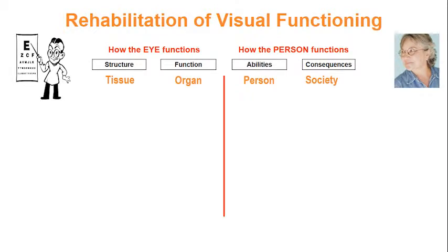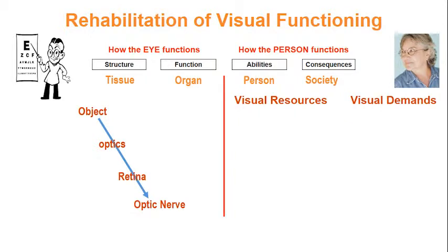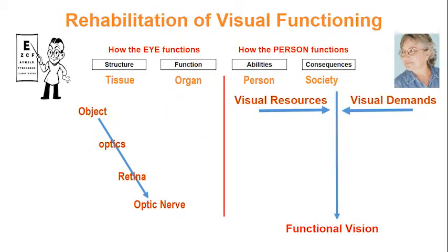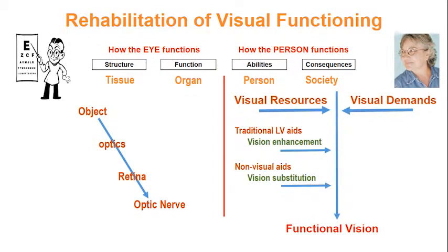The complexity of the problems on the left and on the right is also different. On the left, where we deal with how the eyes function, there is a fairly straightforward path from the object screen through the optics of the eye to the retinal image and on to the optic nerve signal. On the right, where we deal with how the person functions, we must deal with the interaction of task demands and visual resources — it is only the balance between these two that determines functional vision. Traditional low vision care addresses mainly the optical aspects, but comprehensive vision rehabilitation requires much more, including vision substitution skills such as braille, long cane, or speech output, which can enhance resources.